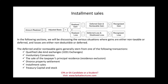Installment sales is one of these transactions where the gain may be deferred to a future period — just like a qualified like-kind exchange and involuntary conversion. We already covered 1031 as well as involuntary conversion, and now we will look at how the deferred gain occurs from an installment sales perspective.